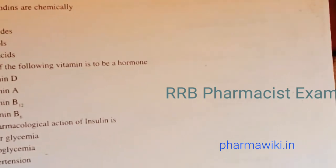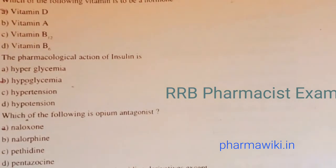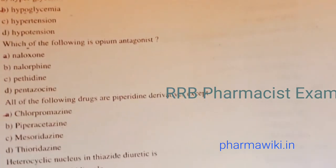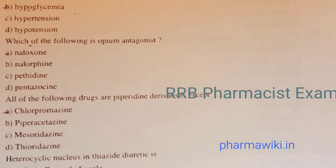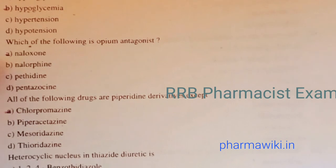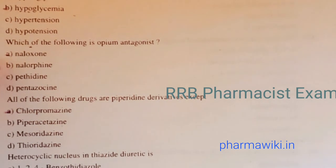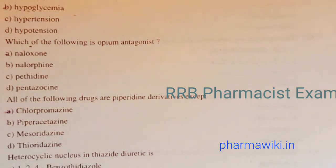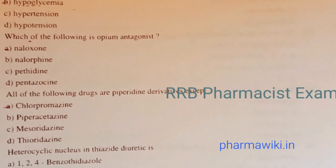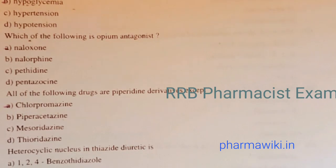Question 57: The pharmacological action of insulin is hypoglycemia, not hyperglycemia. Question 58: Which of the following is an opium antagonist? The answer is naloxone.